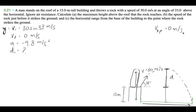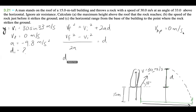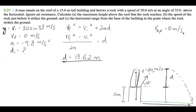If we want to find D1, we have three knowns and one unknown, so we use one of the five kinematic equations. The one that comes to mind is VF squared equals VI squared plus 2AD. Isolating and plugging in our values, we get D equals 13.62 meters. So the rock goes 13.62 meters above the top of the building — that's our answer for part A.